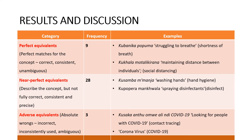This table provides a general picture of the quality of the equivalents for the 40 COVID-19 terms as determined by each term's raw score across the three parameters. Based on each term's raw score, the equivalents were categorized into three groups: perfect equivalents, near-perfect equivalents, and adverse equivalents. Perfect equivalents are those that perfectly match or perfectly describe the concept described by the source term. We had nine of these. A good example is kubanika or upuma, which translates into 'struggling to breathe' — an equivalent representing shortness of breath.